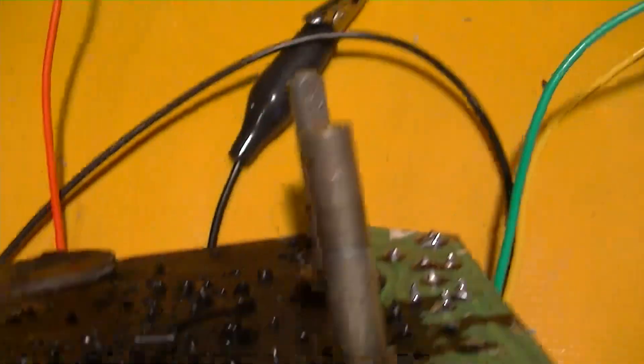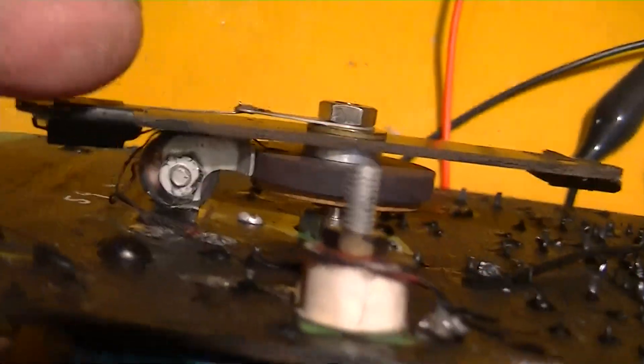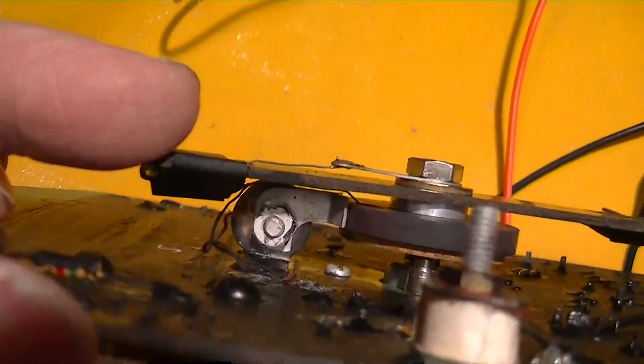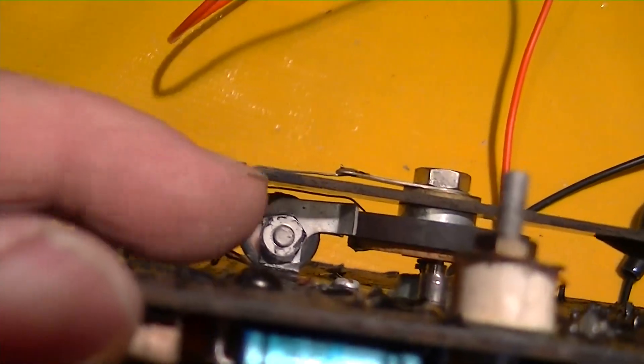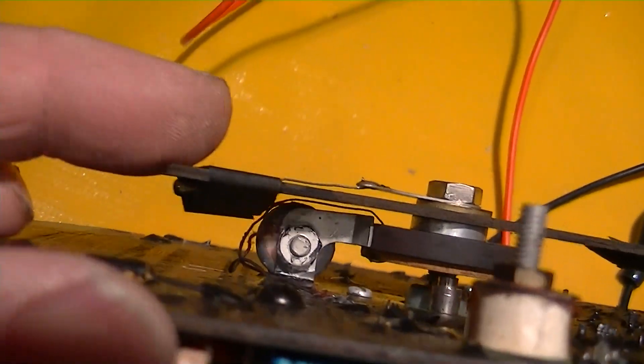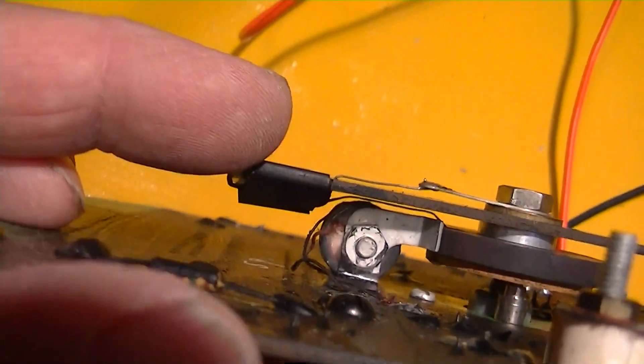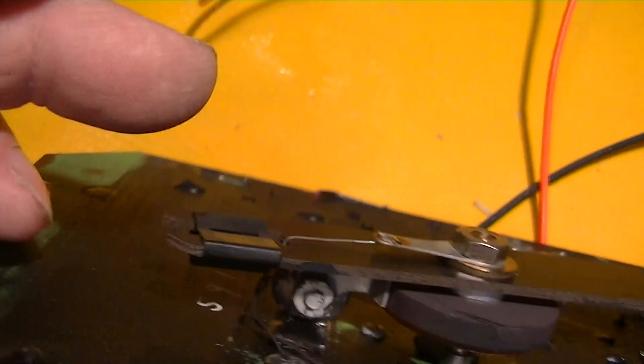But in any case, there was no clearance between this rotating arm and this magnetic pickup. And that wire, that tiny little wire right there, that little one, was rubbing against the pickup coil, and wouldn't let the thing rotate.